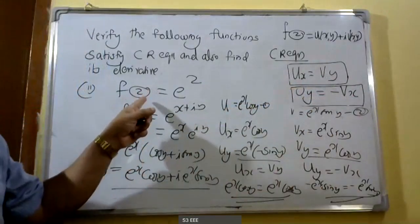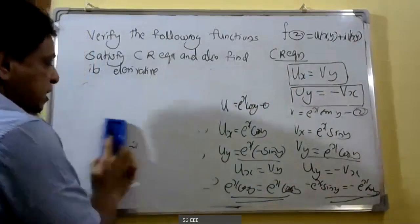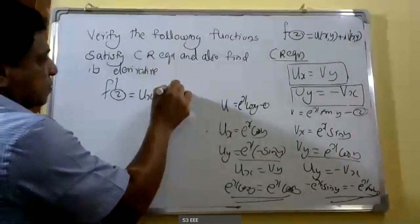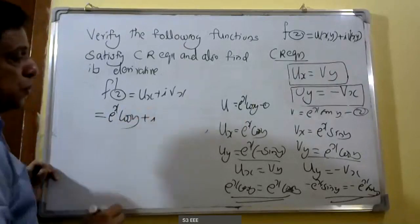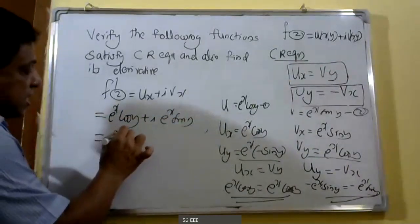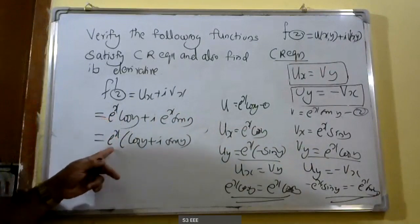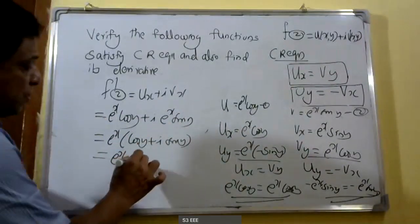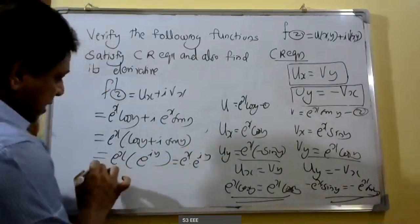Our conclusion is that f of z equals e raised to z satisfies the Cauchy-Riemann equations. Here also we have to find out its derivative. To find the derivative, we use the formula f dash equals u_x plus i v_x. Here u_x equals e raised to x cos y, plus i into v_x equals e raised to x sine y.